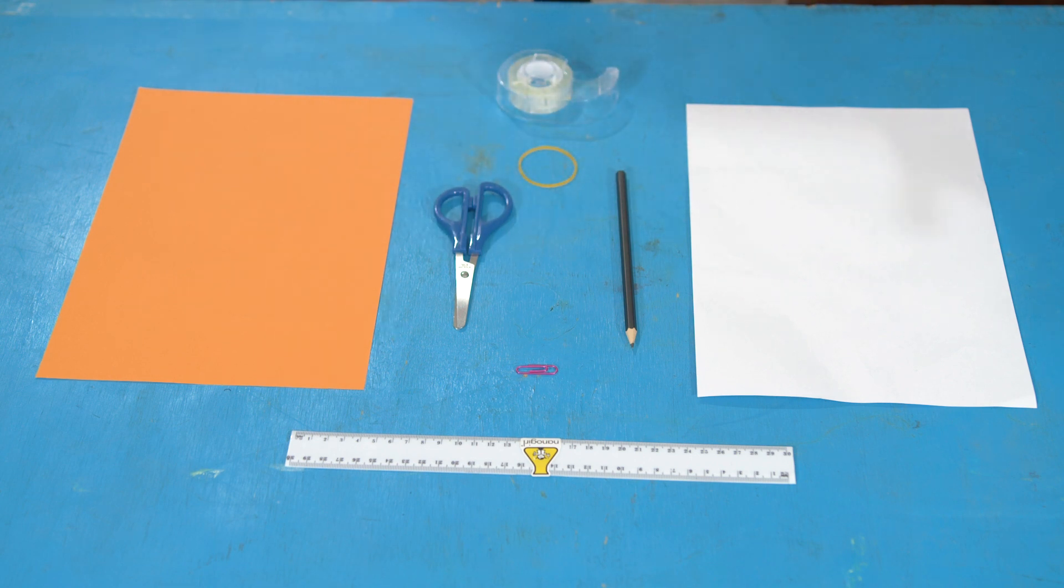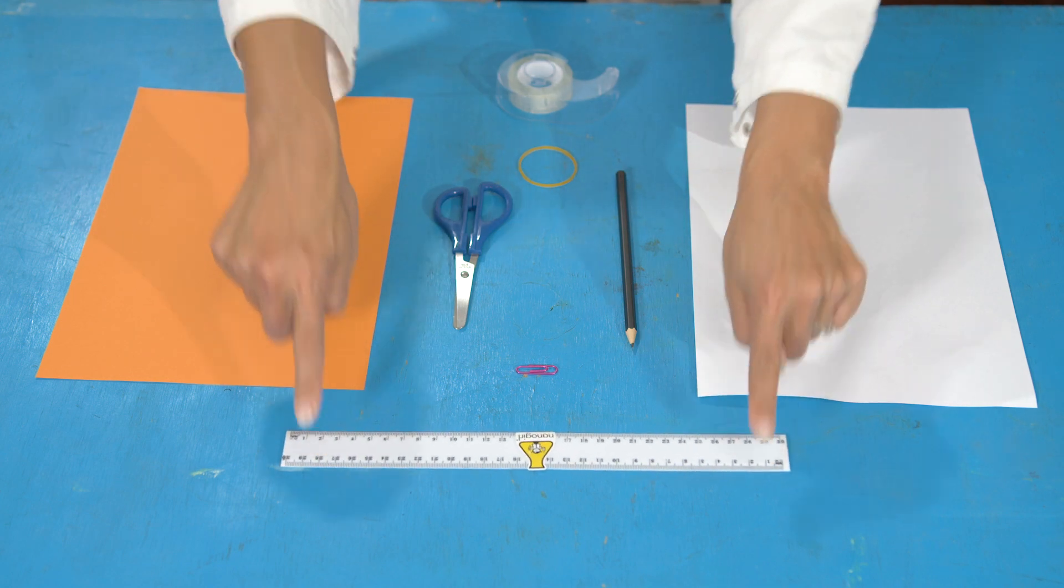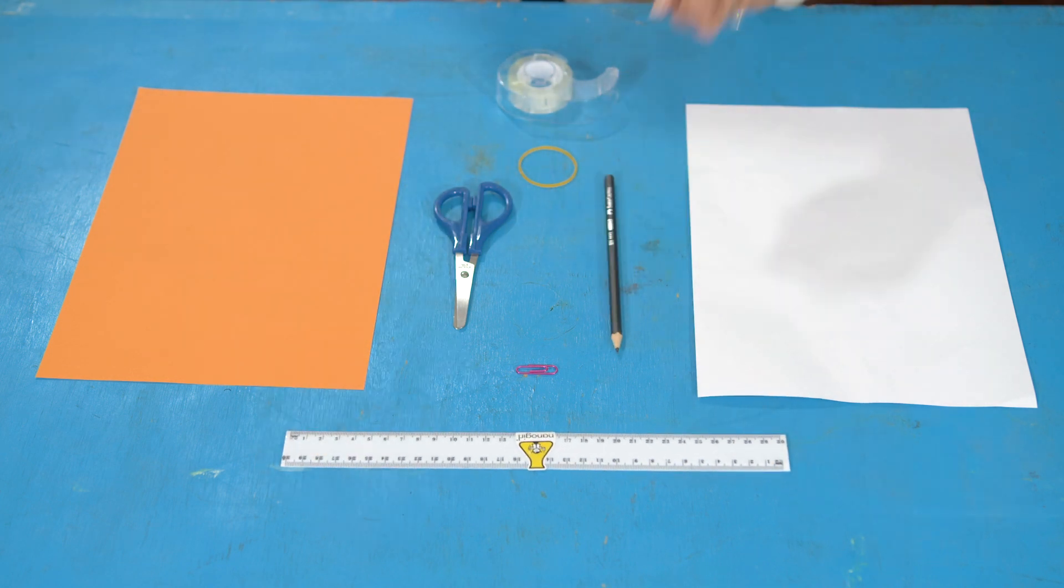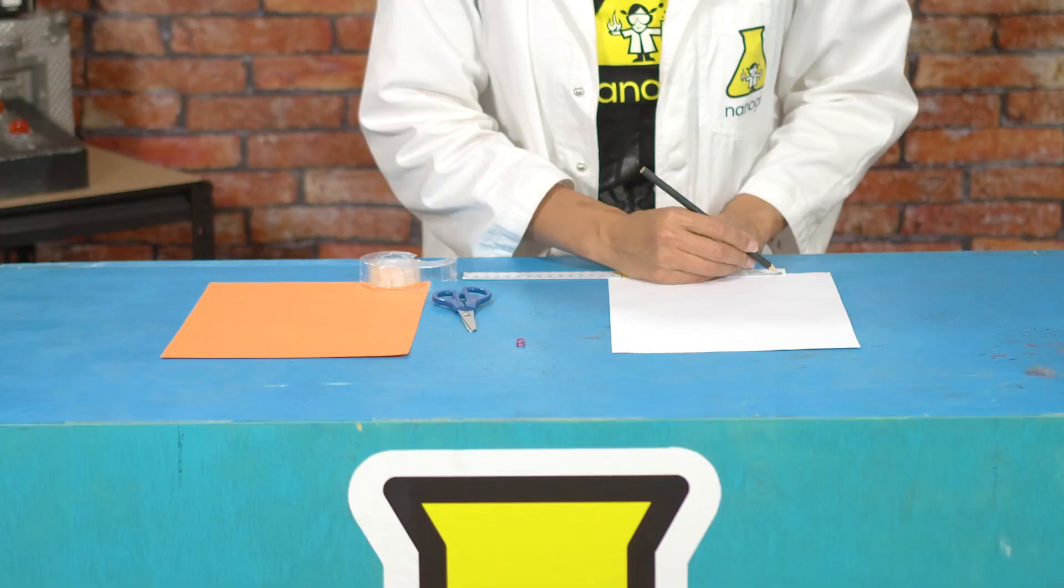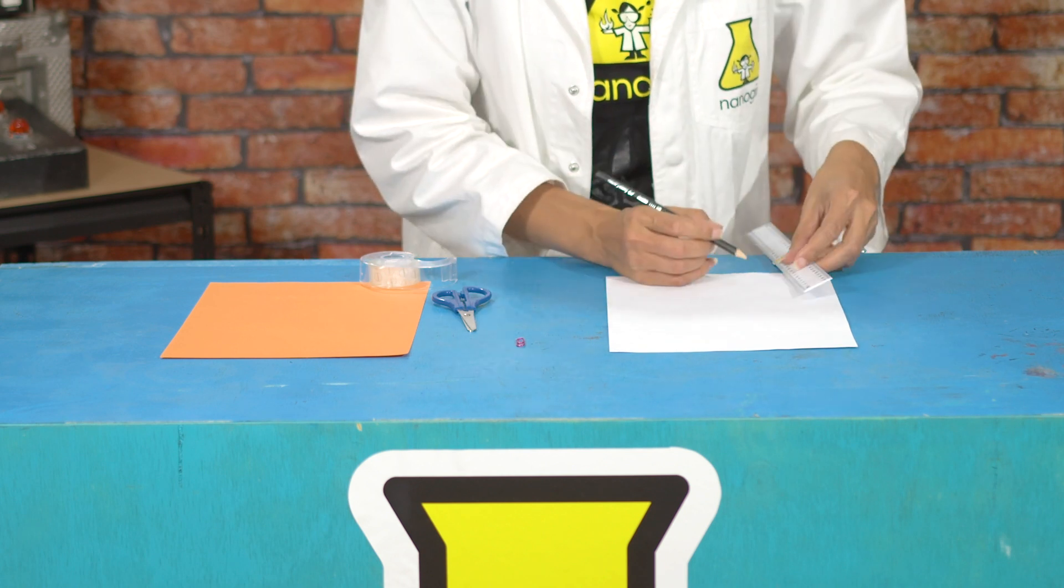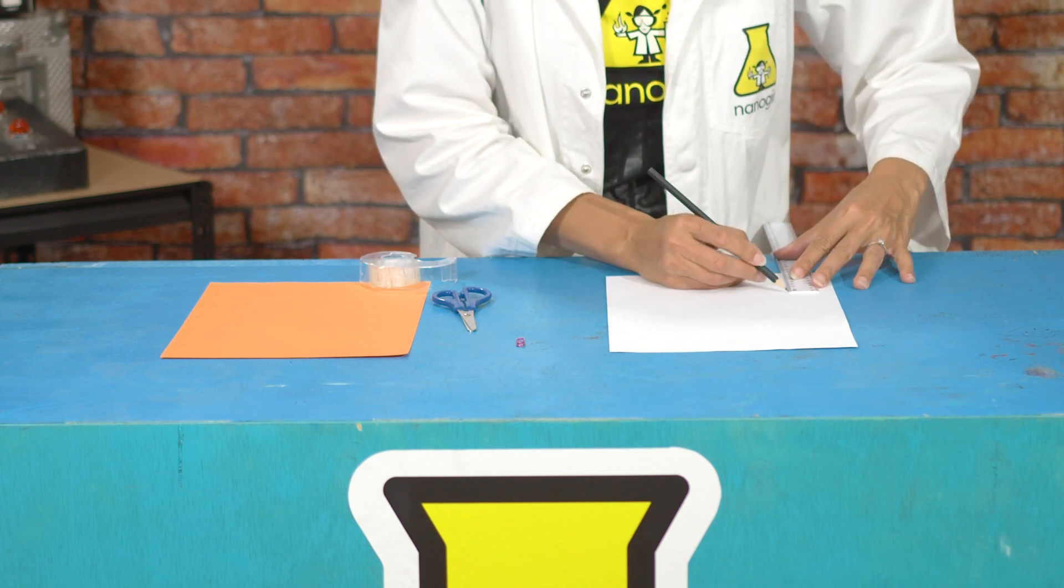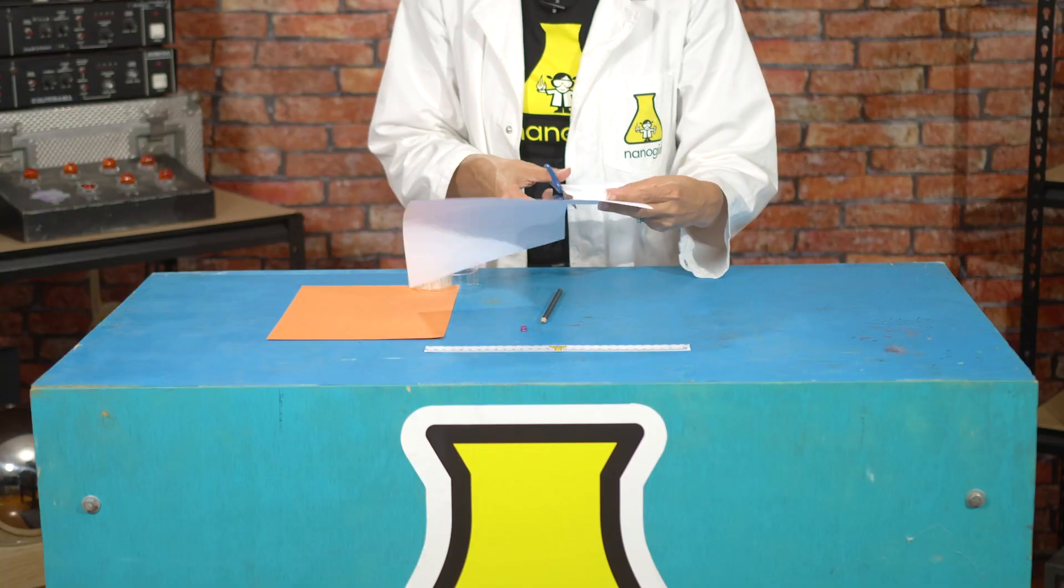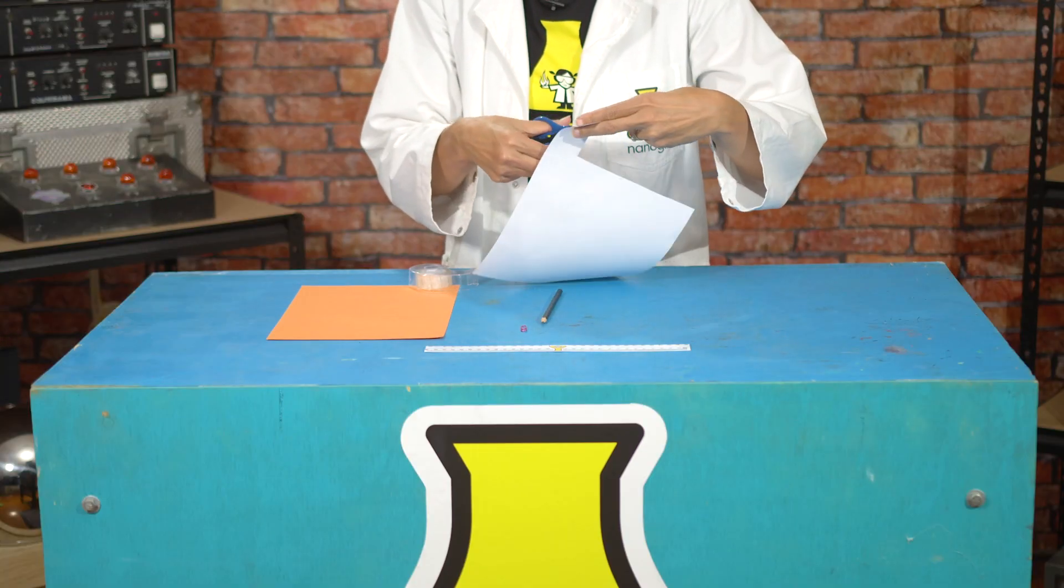Start by measuring and drawing a rectangle on your piece of paper that's 16 centimeters long and 8 centimeters wide, then cut it out. Fold it in half to make it narrower, and then in half again.